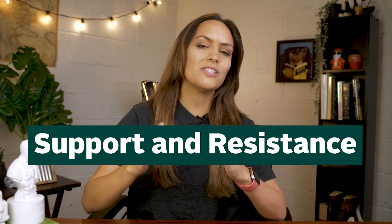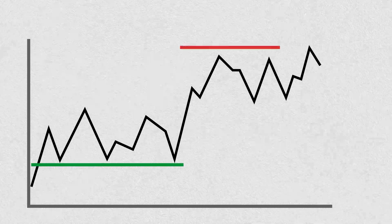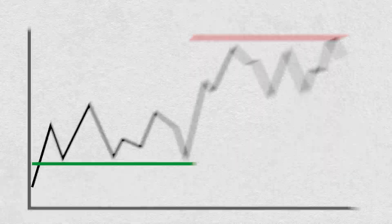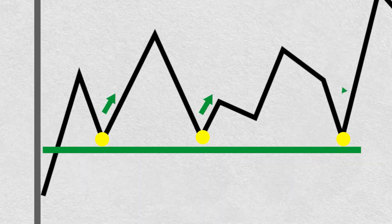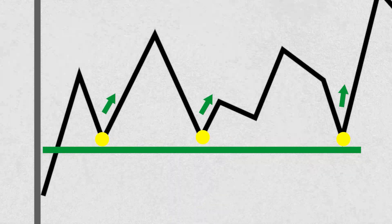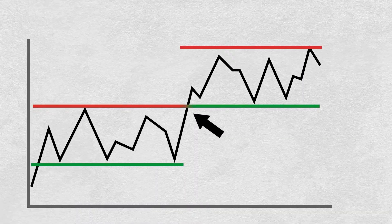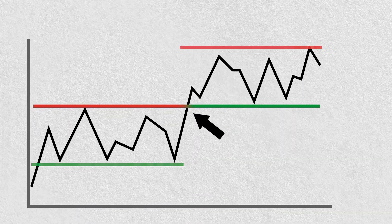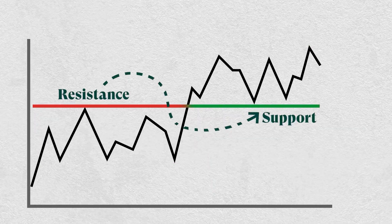Another staple in analyzing price action is support and resistance levels. The idea behind support and resistance levels is that price movements will reach certain levels that act like a floor or ceiling for price. Prices are expected to pause and reverse at these levels due to increased buying or selling at those points. However, when prices eventually break through these levels and go further upwards or downwards, the previous support or resistance levels will be flipped.